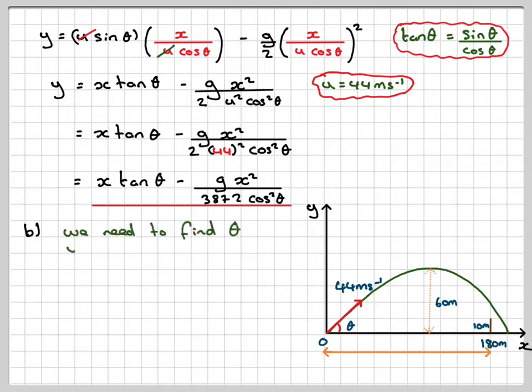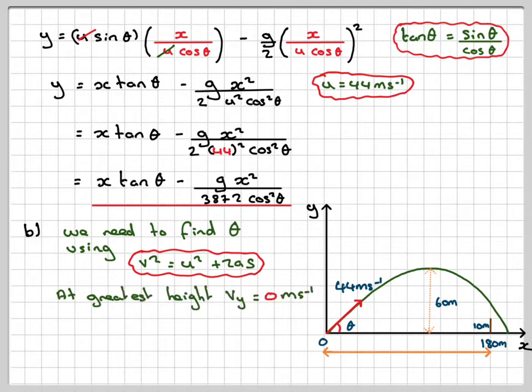So we need to find theta. Now it's easier if you use v squared equals u squared plus 2as. In the vertical motion, you know that the velocity here is going to be equal to zero. At the greatest height, the vertical component velocity is going to be zero. So if we put zero in here,